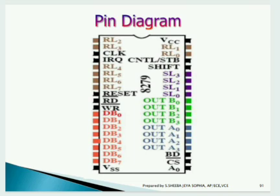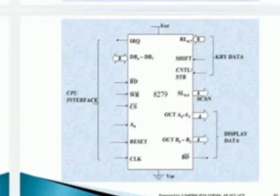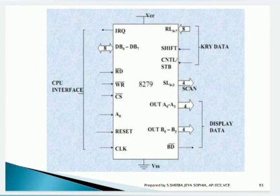You can see the major pin diagram of this 8279. It is a 40-pin dual-in-line package with 20 pins on each side of the IC. The corresponding pins are organized into four sections: the first section deals with the keyboard section, the second one is the display section, the third one is the scan section, and finally the CPU interface section.